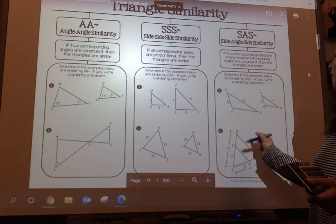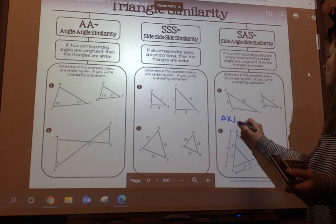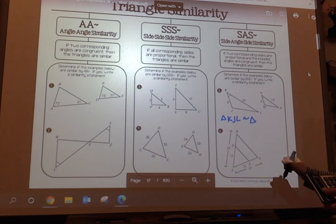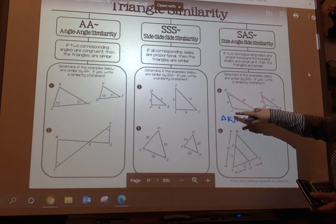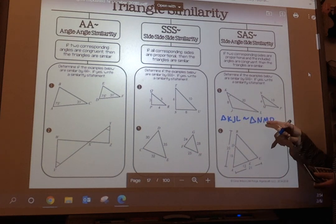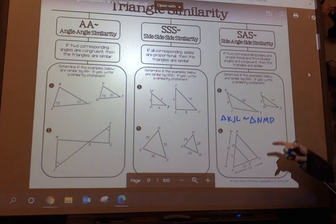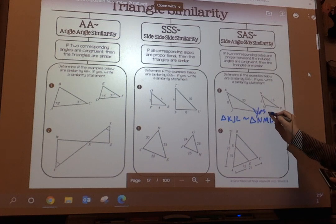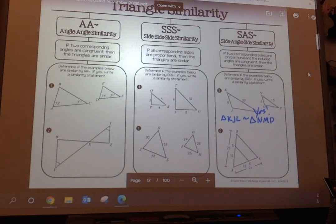And remember, if I said triangle KJL is going to be similar, so I'm going from 1 to 0, 1 to 0, so NMP. That order does matter, okay? So I can because I tested it and it meets the criteria.